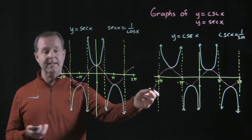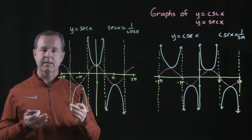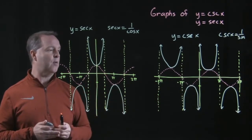Notice that we have vertical asymptotes at all the integral multiples of pi, zero pi, one pi, two pi, and so forth.